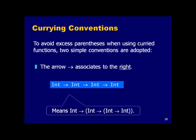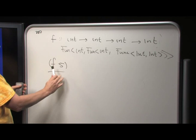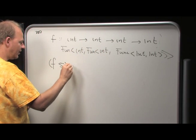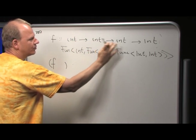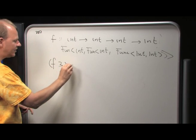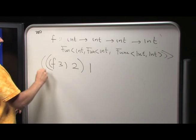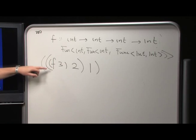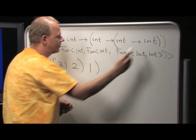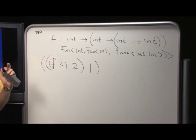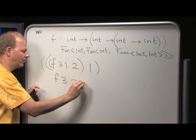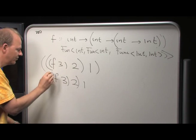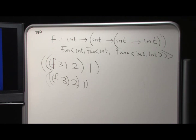Just as the function type arrow associates to the right, function application associates to the left. So in Haskell you can write `f 3 2 1`, which means apply f to 3, then that result to 2, then to 1, yielding an integer. You can leave out the parentheses. Again, syntax is carefully crafted to match both the type structure and the expression structure.